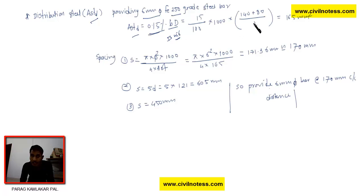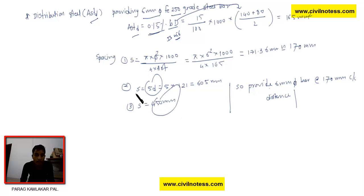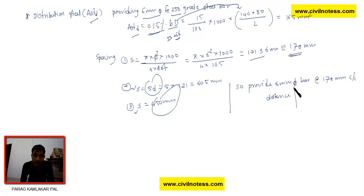For the distribution steel, the AST is 0.15% of B × D, as per IS 456. We use the average depth for D. The spacing for distribution steel allows a larger value. We get approximately 171 mm, which we round to 170 mm. So we provide 6 mm diameter bars at 170 mm center to center for the distribution steel.